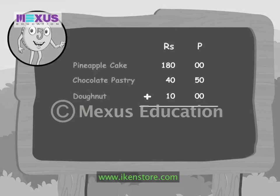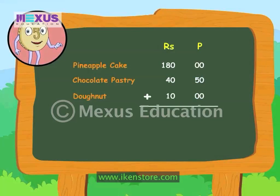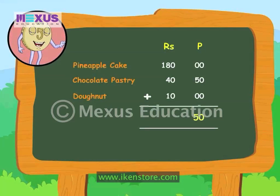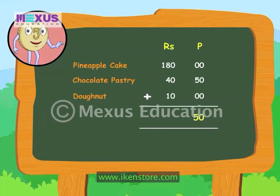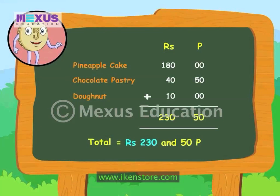We start adding from the right side column. So, on adding the paise, we get a total of 50 paise. Next, we add the rupees and we get a total of 230. So, the total amount is 230 rupees and 50 paise.